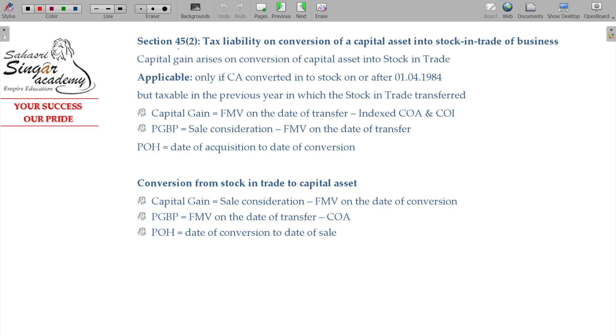Section 45 Class 2, tax liability on conversion of capital asset into stock-in-trade. Capital gain arises on conversion. Applicable only if the current capital asset converted into stock-in-trade on or after 1-4-1984. That is the conversion date. It is applicable. Of course, the Act says so, but practical applicability, some doubt.